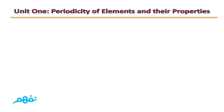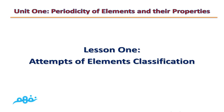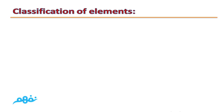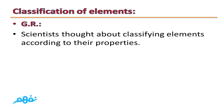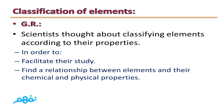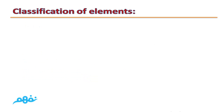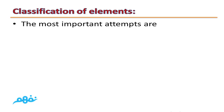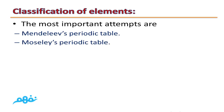Unit 1: Periodicity of Elements and Their Properties, Lesson 1 - Attempts of Elements Classification. Scientists thought about classifying elements according to their properties. The most important attempts we will study in this lesson are Mendeleev's Periodic Table, Moseley's Periodic Table, and finally the Modern Periodic Table.